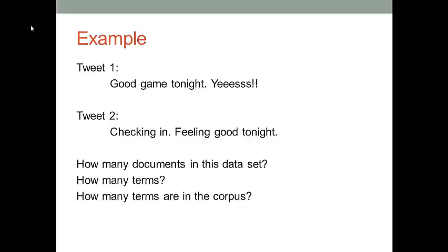So the second good will not be taken by the corpus. What about tonight? This tonight is not unique. Because we already have a tonight from the first document. In the corpus, we already have a tonight. So the second tonight will not be taken in the corpus. Totally, we have seven terms consisting of the corpus. They are good, game, tonight, yes, checking, in, and feeling. These are the terms consisting of the corpus in our dataset.